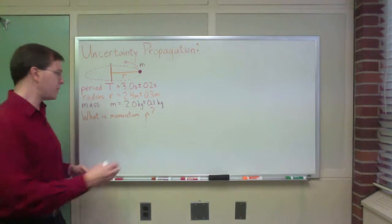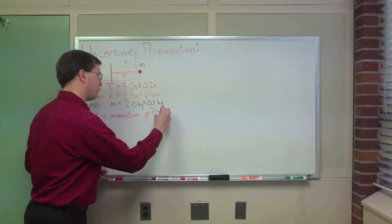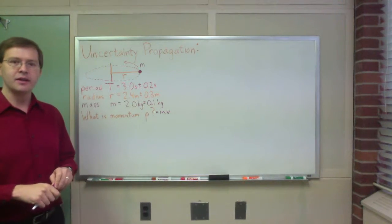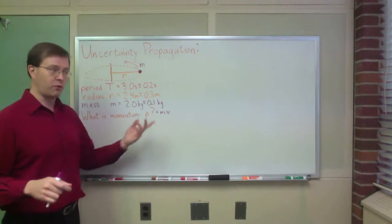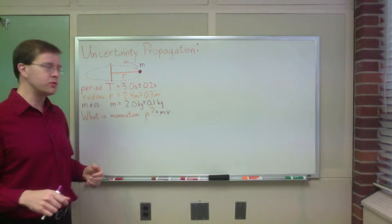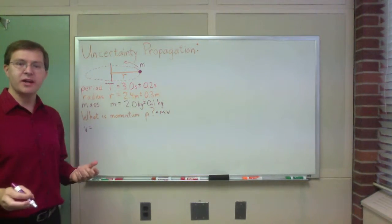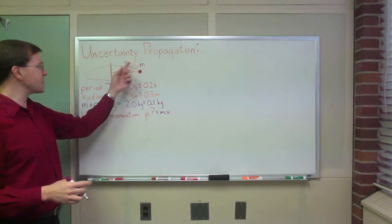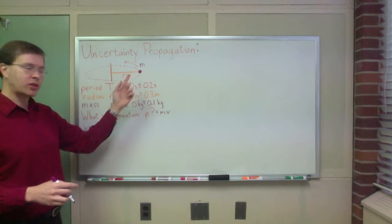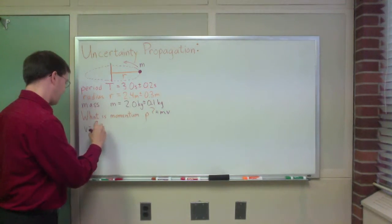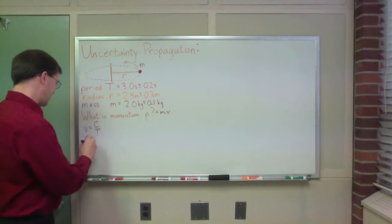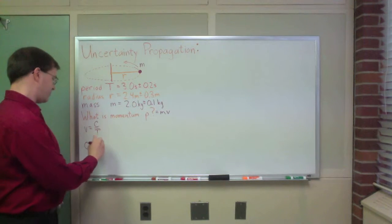p, momentum, we know is equal to mass times velocity, mv. For mass times speed, really, since I'm doing magnitudes. So the speed is equal to distance divided by time. The total distance for one full period is the circumference divided by time. And the circumference, then, is 2 pi r. Excellent!